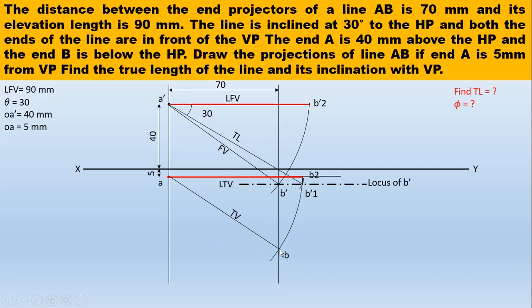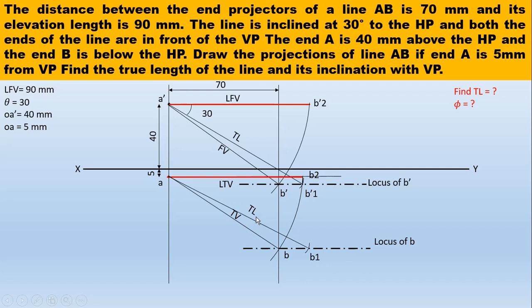You already know the length of the line, which is the true length. Use A-dash B-dash-1 as radius and A as center, make an arc on the locus of B — that will give you point B1. This is nothing but the true length in top view.